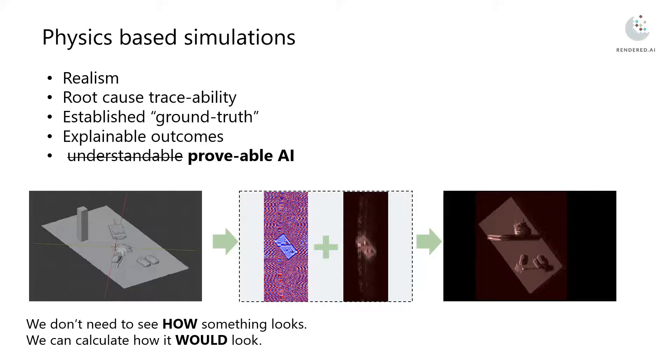In fact, there are other tools that can give us apparently realistic images, such as generative adversarial networks. But with the physics-based engines, we get root-cause traceability. So we can really understand what is driving the elements of that scene, which is not the case when we use other generative methods.